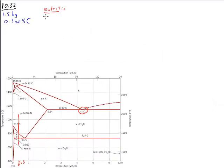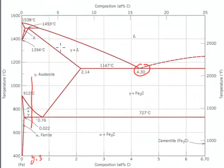A eutectoid point means it's good melt-like. So we're not actually going from liquid to two phases. We're going from a solid phase to two different solid phases. In this case, gamma austenite to alpha plus Fe3C, which is ferrite and cementite.